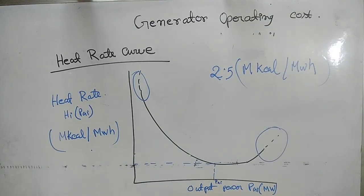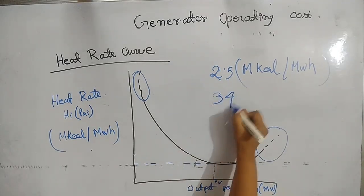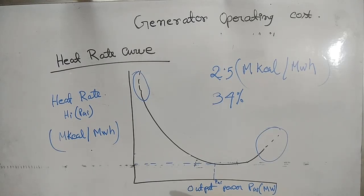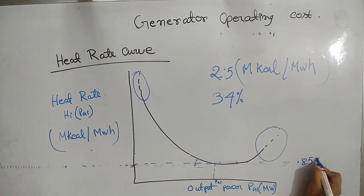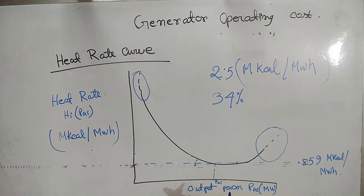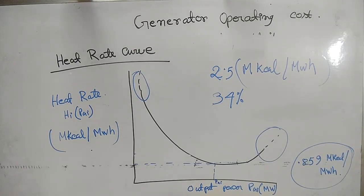This gives a peak efficiency of about 34 percent. Since all input energy is not converted to electrical energy output, the heat rate indicated in this figure can be further reduced at all points if the conversion from input fuel energy to electric energy is 100 percent. For 100 percent conversion, the heat rate is approximately 0.859 M kilocalorie per megawatt hour.